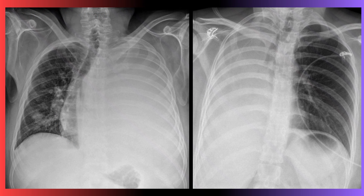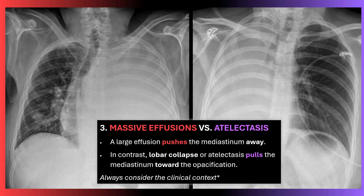Third, we want to be able to tell the difference between a massive effusion versus atelectasis. In a massive effusion, you'll see the mediastinum being pushed away. In contrast, with lobar collapse or atelectasis, the mediastinum is pulled towards the opacification. Always consider the clinical context.